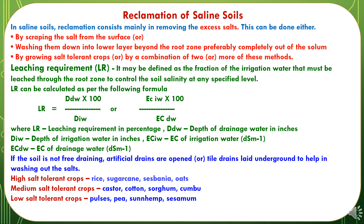If the soil is not free draining, artificial drains are opened or tile drains are laid underground to help in washing out the salts. Regarding growing tolerant crops, high salt tolerant crops include rice, sugarcane, sesbania and oats. Medium salt tolerant crops include castor, cotton, sorghum and cucumber.